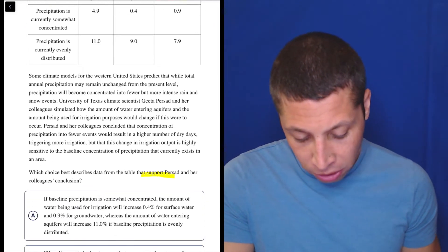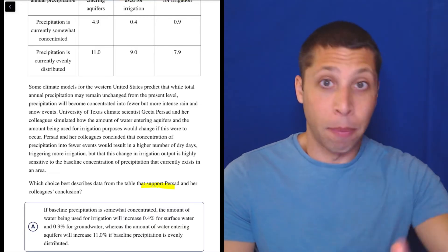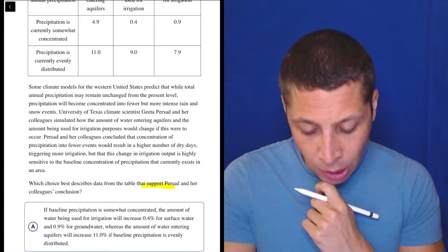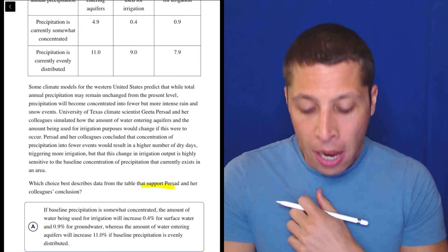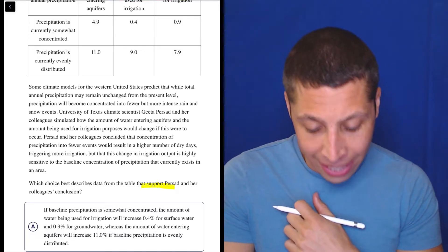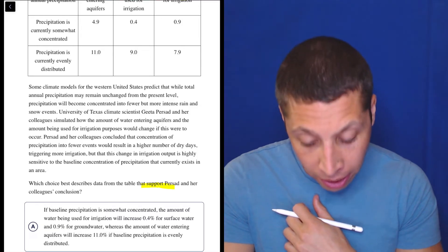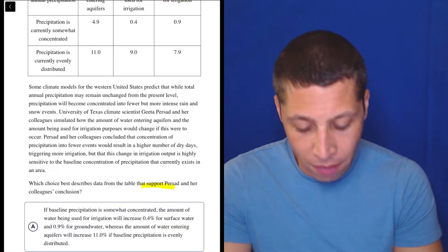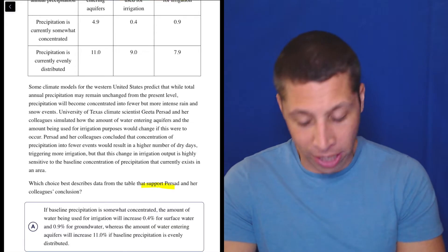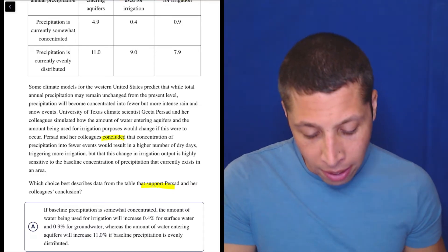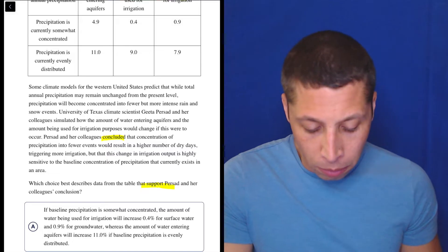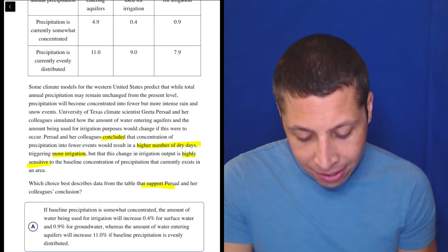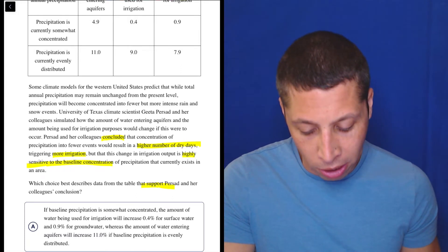We need to support this person's conclusion, so let's take a look at the passage first. Let's get her conclusion out of here. Some climate models for the Western United States predict that while total annual precipitation may remain unchanged from the present level, precipitation will become concentrated into fewer but more intense rain and snow events. University of Texas climate scientist Greta Persad and her colleagues simulated how the amount of water entering aquifers and the amount being used for irrigation purposes would change if this were to occur. Notice, we haven't gotten to the conclusion yet.